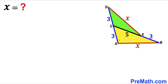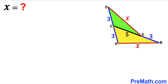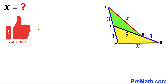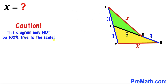Welcome to PreMath. In this video we have got two triangles: the yellow triangle ABC and the green triangle CDE put together as shown in the given diagram. The blue segments CD, AC, and segment EB are three units each, while segment CE is five units. Segment AB is equal to segment DE, both X units long. Our task is to find the value of X. Please keep in mind that this figure may not be 100% true to scale.